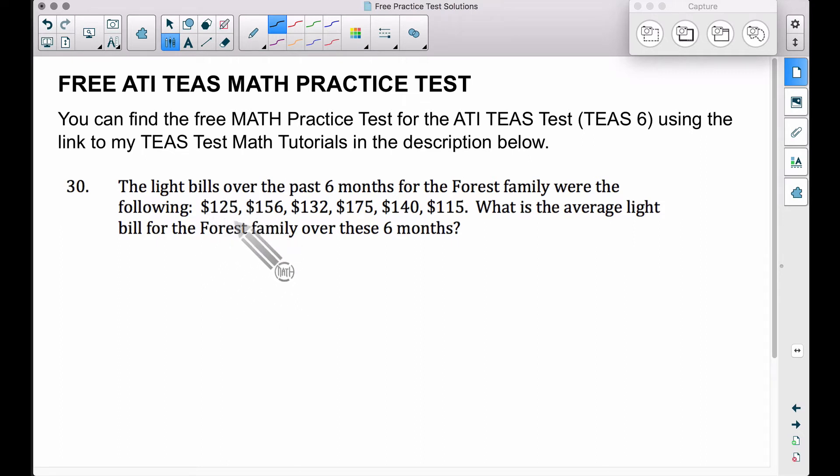We want to add up all six of these bills, and we want to divide by six because we have six of them. It's no different than finding a test average in a class. You take how many tests you had in a class, you add up all those test grades, and you divide by how many test grades you have. So that first step again is to add all six numbers up.